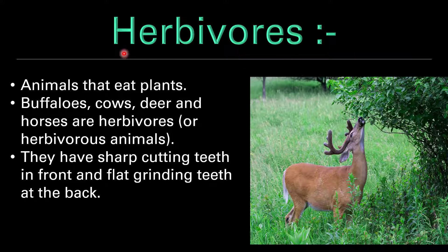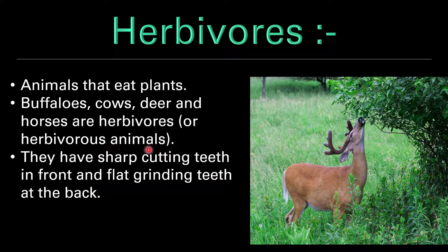Herbivores are animals that eat plants — like buffalo, cows, deer and horses. They have sharp cutting teeth in front and flat grinding teeth at the back.